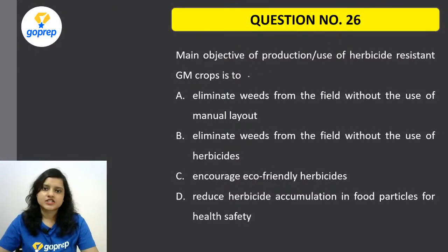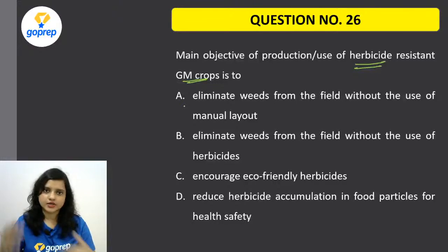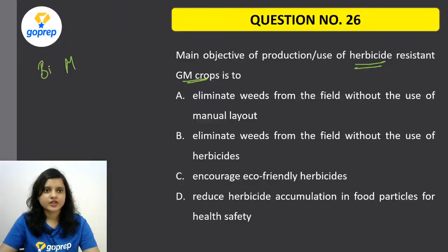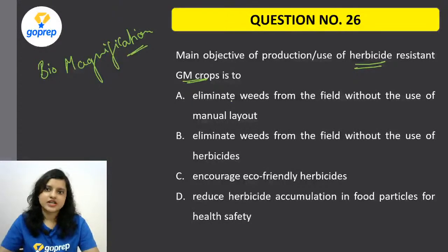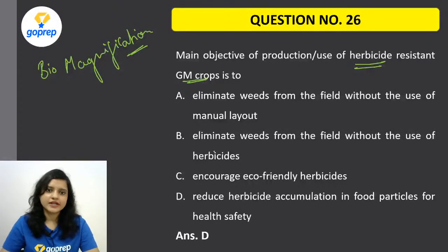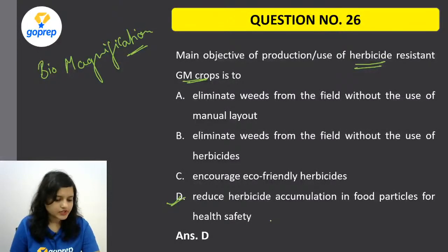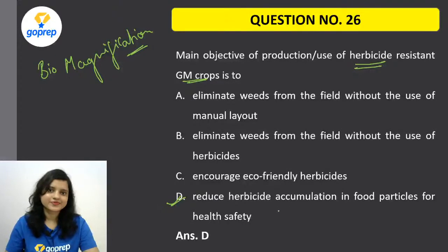Question 26: The main objective of production or use of herbicide-resistant genetically modified crops — remembering biomagnification — the correct option is D: to reduce herbicide accumulation in food particles for health safety.